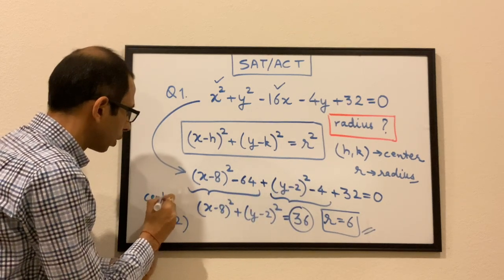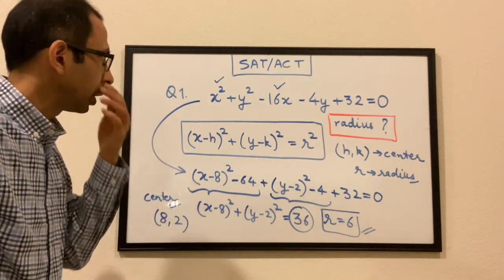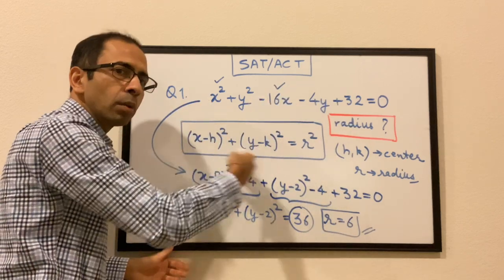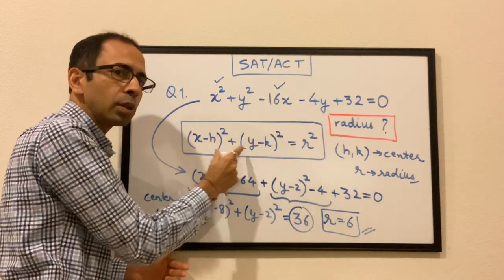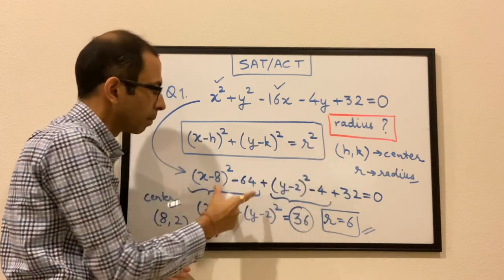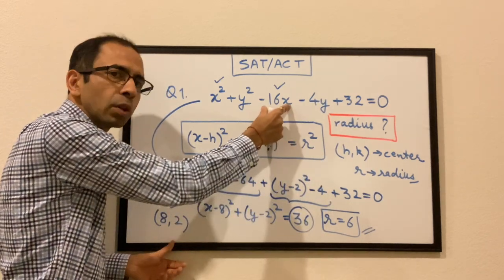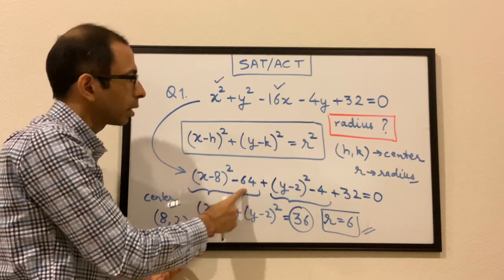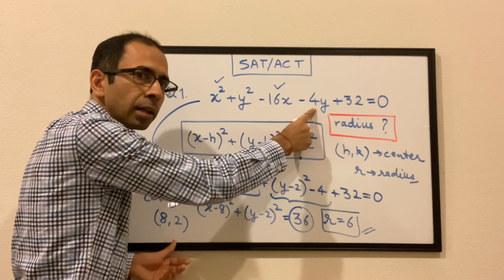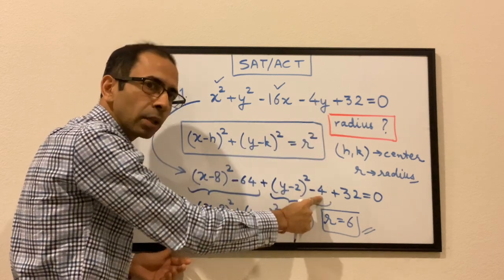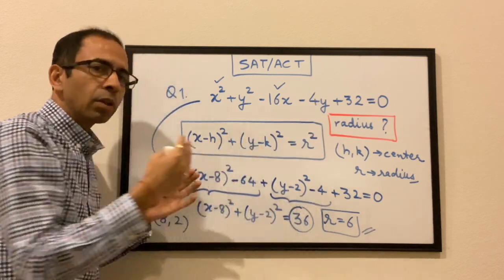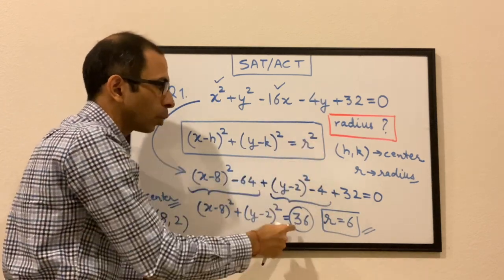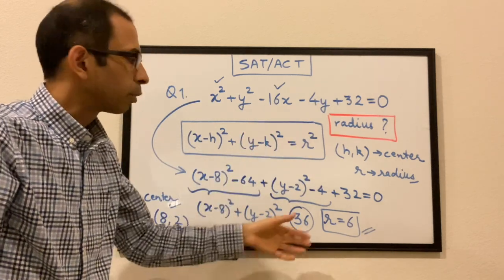To summarize: we transformed the given equation into the standard form (x − h)² + (y − k)² = r². The technique is to take the coefficient of x, divide by 2, then negate the extra constant generated. Do the same for y. Consolidate all constants on the other side — that gives r², and its square root is the radius.